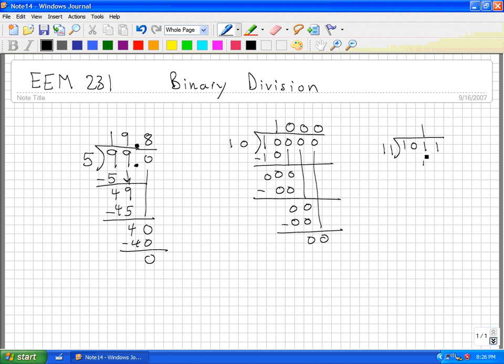1 times 1 is 1. 1 times 1 is 1. Subtract. 1 minus 1 is 0. This 0 minus 1, I've got to borrow from this. This will become a 0. This will become 10, which is basically what it is already. 10 minus 1 will be a 1. Then we bring down the 1.